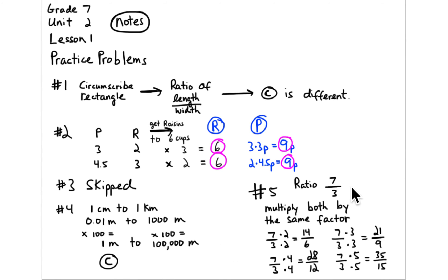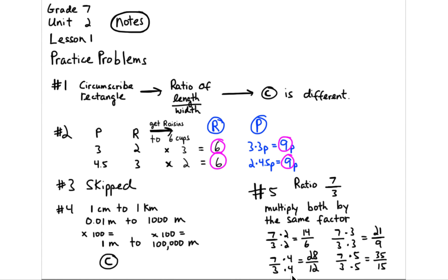The last problem asks you to write equivalent ratios to 7 to 3. Multiply both the 7 and the 3 by the same factor: times 2 gives 14 to 6; times 3 gives 21 to 9; times 4 gives 28 to 12; times 5 gives 35 to 15. I've provided these slides as a PDF, which I'll make available in the link in the video description.